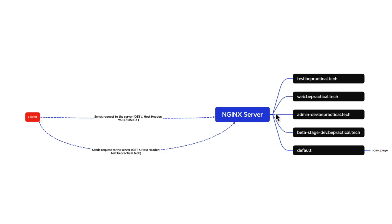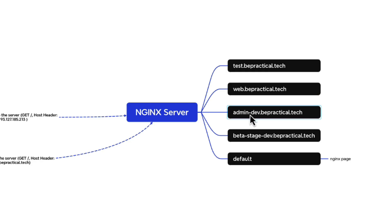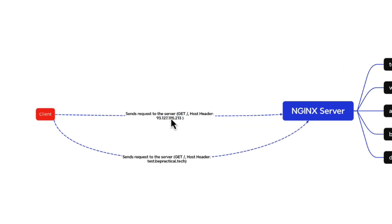No matter how many content discovery techniques you apply, you will always hit the default server because the host header points to the default nginx configuration. However, inside an nginx server there can be multiple internal applications. For example, you can have test.bepractical.tech, web.bepractical.tech, admin, dev, and beta-stage-dev.bepractical.tech all hosted inside it. To access these, you need to go through the nginx server.